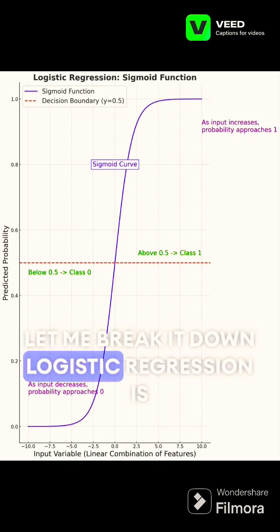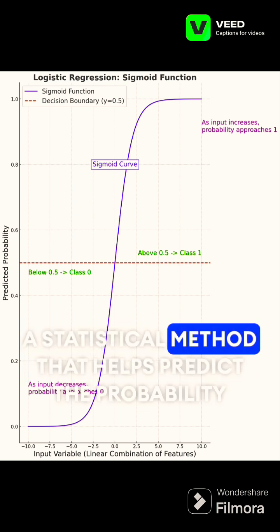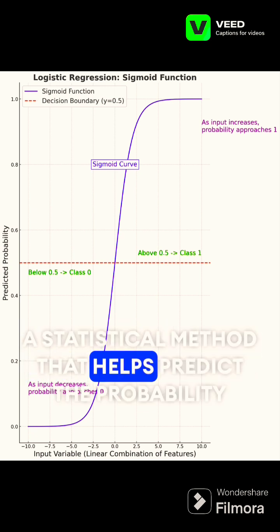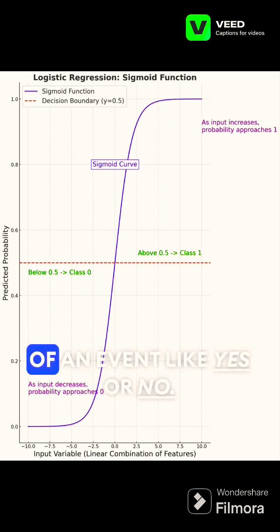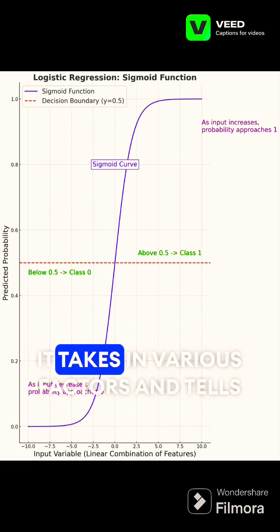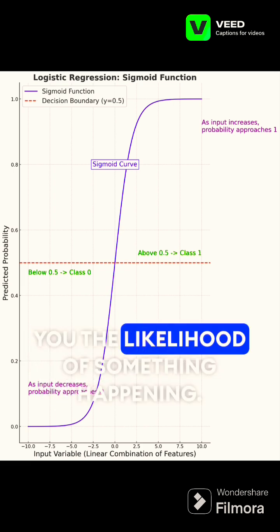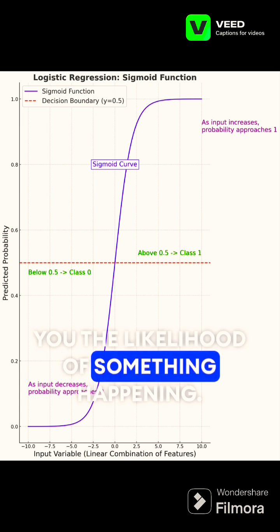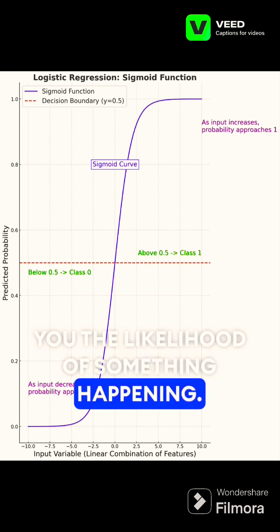Let me break it down. Logistic regression is a statistical method that helps predict the probability of an event, like a yes or no. It takes in various factors and tells you the likelihood of something happening.